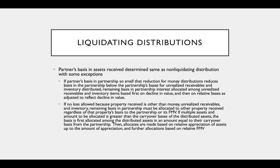If there are multiple assets and the amount to be allocated is greater than the carryover basis of the distributed assets, the basis is first allocated among the distributed assets in an amount equal to their carryover basis. We then further allocate based on relative appreciation of the assets up to the amount of appreciation, and if there's more basis to allocate, we allocate based on relative fair market values.